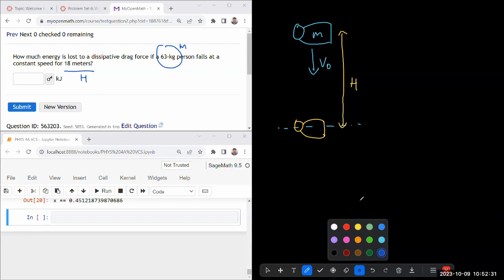So once they tell you that the falling happens at a constant speed, that should be a trigger for you that they are talking about terminal velocity. And once you remember that this is related to terminal velocity, you should remember, oh,